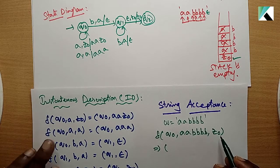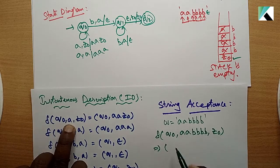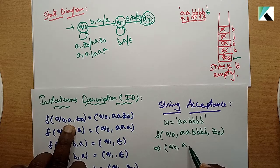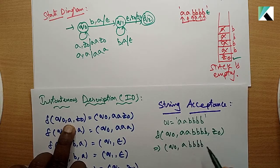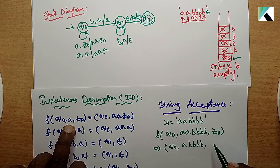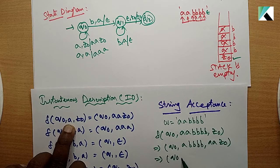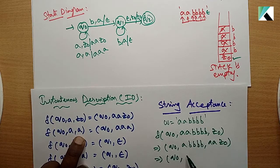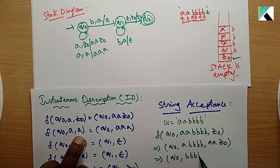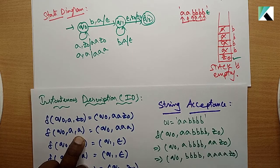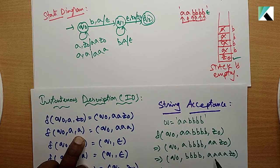q0 on a with z0 gives q0 with aa and z0. Same state q0. Process the second a - now we have aaaa and z0. q0 with b and a on the stack, pop operation and state changes to q1.